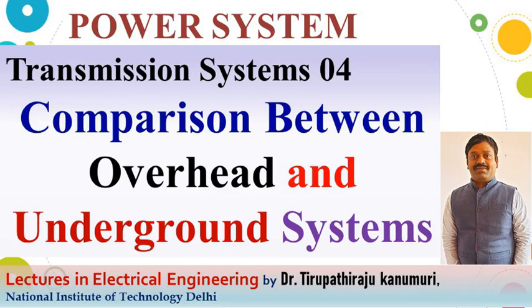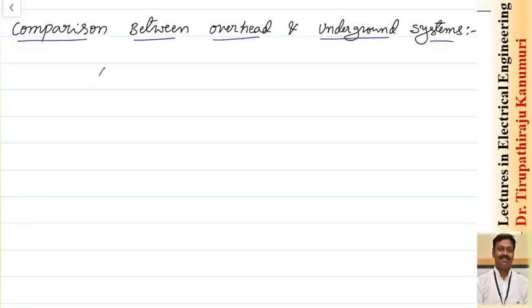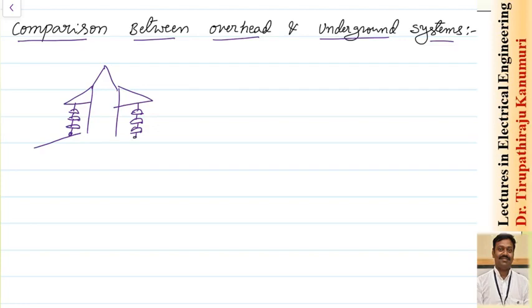Today we are going to discuss the comparison between overhead and underground systems. In the overhead system, there will be a tower, and from the tower there will be insulators hanging, and the conductor will be placed on them. Similarly, there will be an insulator on the second side, and the conductors will be lying like this, whatever the number of circuits.